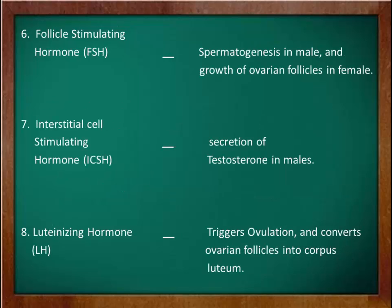The sixth hormone is follicle stimulating hormone, or FSH. This hormone stimulates the process of spermatogenesis — that is, the production of sperm in males — and the growth of ovarian follicles, or the process of ovulation, in females.